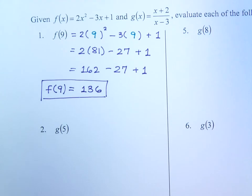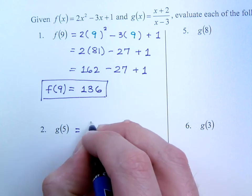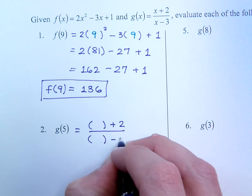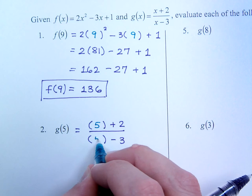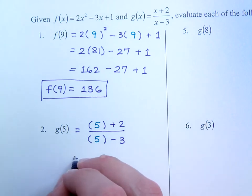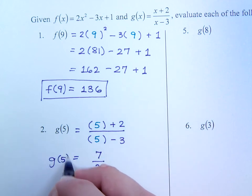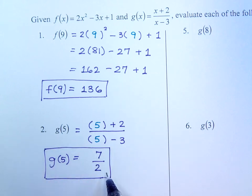So here in number 2 we're using the function called g, and this says to plug it in here where it has x plus 2 over x minus 3. So instead of the x's I'm going to replace those with parentheses right now, and I'll go back and fill in the parentheses with the input value here of 5. So just plug that in and do the math. So I get 5 plus 2 which is 7 over 5 minus 3 which is 2. And that's all we can do. So my function called g evaluated for x equals 5 is 7 over 2.